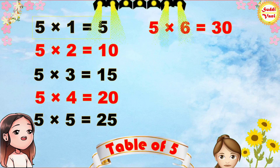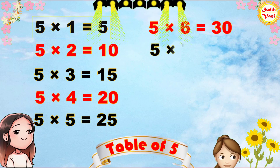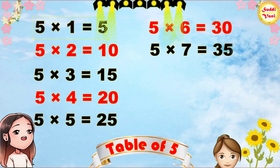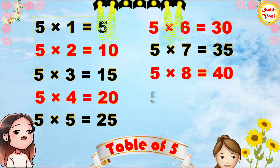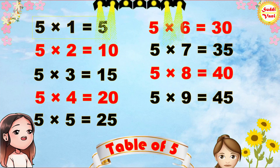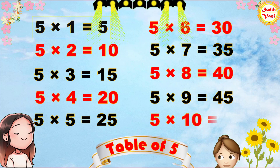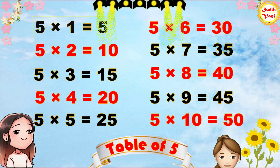5 6s are 30, 5 7s are 35, 5 8s are 40, 5 9s are 45, 5 10s are 50.